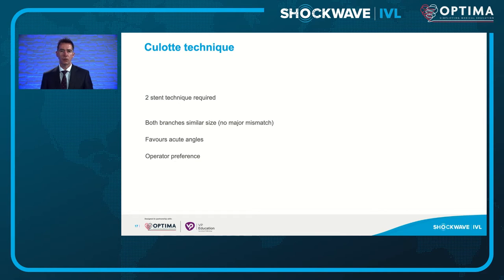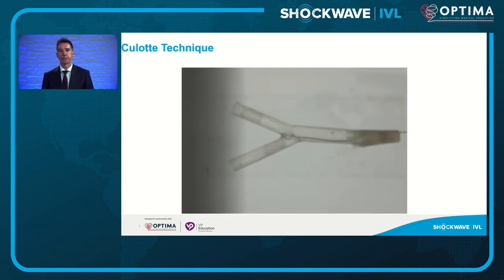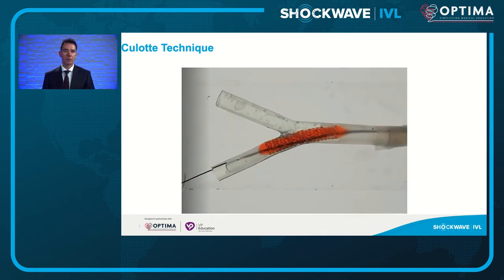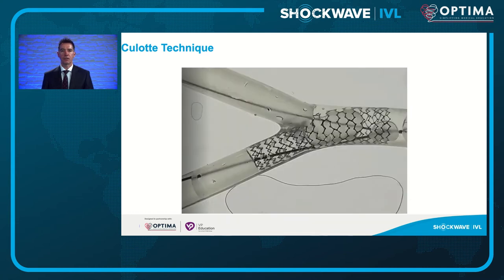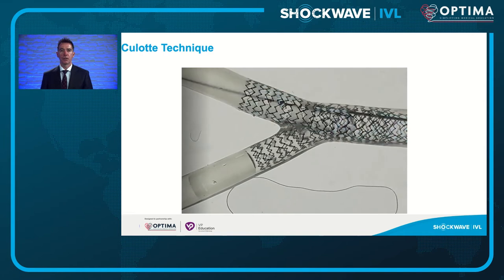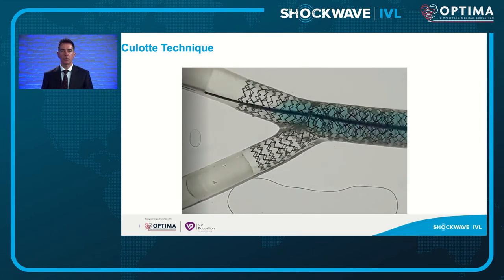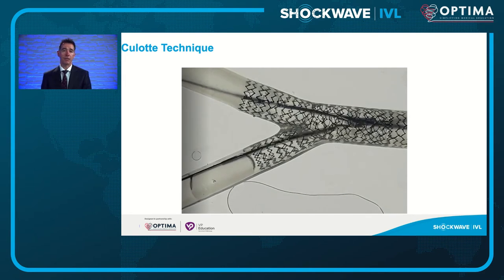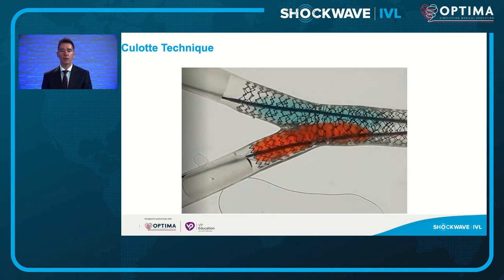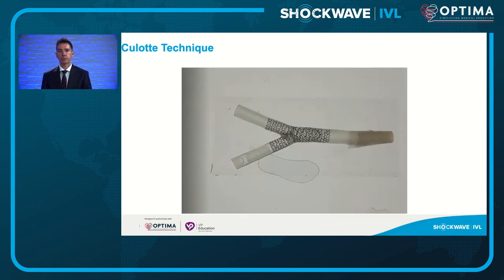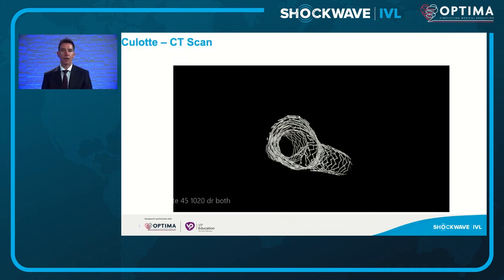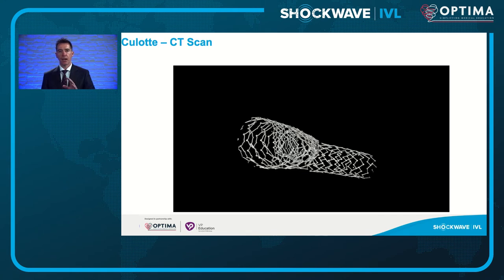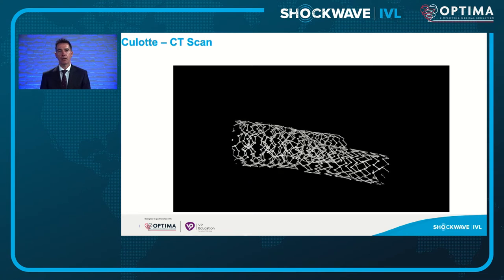The culotte technique is my preferred two-stent bifurcation technique, particularly where both branches are similarly sized with no significant mismatch and where you have a favorable or acute angle. You deploy a stent from the side branch back into the main branch, perform proximal optimization matching it to the proximal vessel size, recross into the main branch, deploy your second stent, perform further proximal optimization, then recross into the side branch and perform kissing inflation. On CT scanning, while there are two layers in the proximal vessel, there's much less metal at the carina - you don't get those big bulges of metal seen with DK crush.